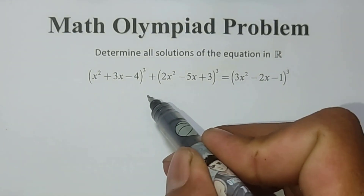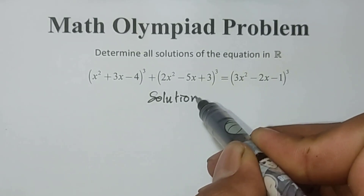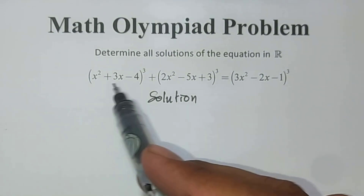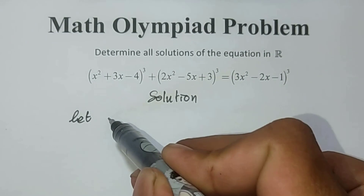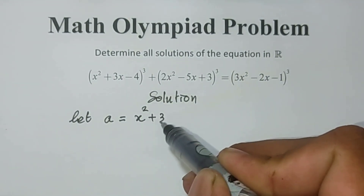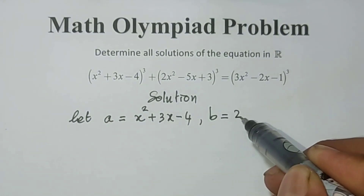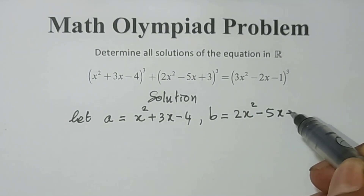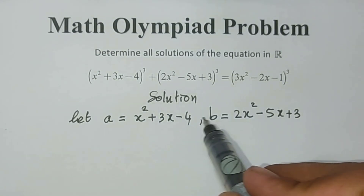Now look at my solution. To solve this equation, I let A equal x² + 3x - 4 and B equal 2x² - 5x + 3. The next step is adding A and B.